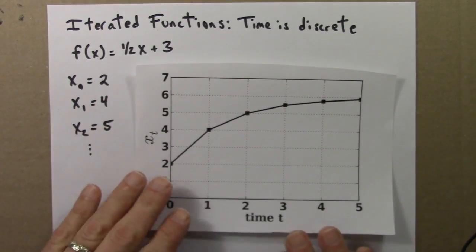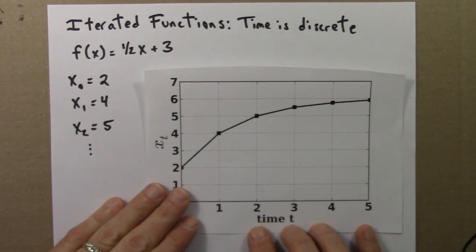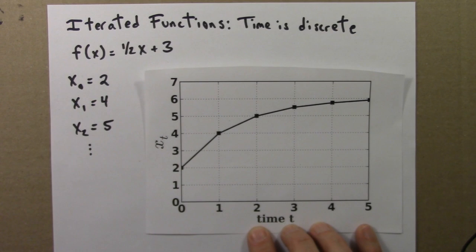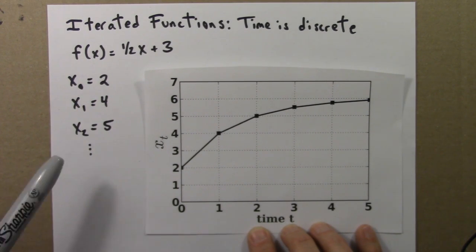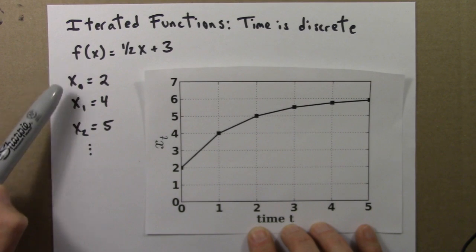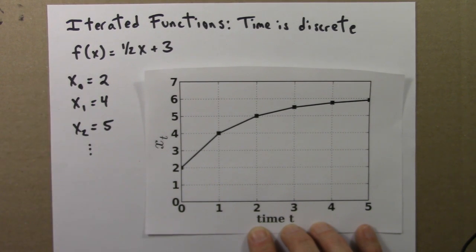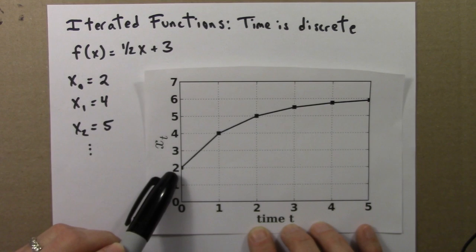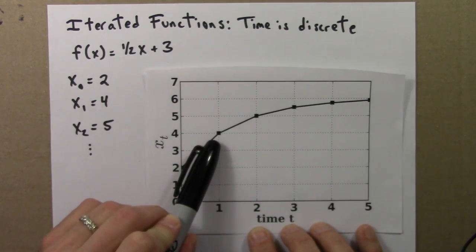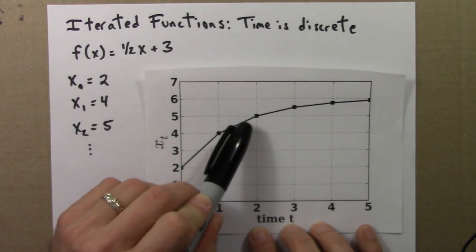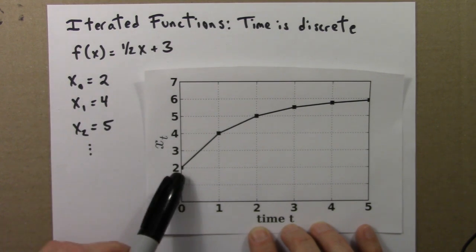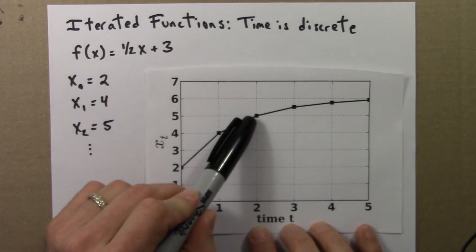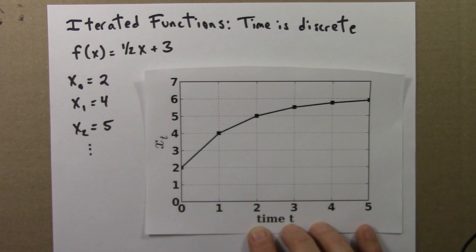As we did before, we can plot this in a time series plot. Here's a time series plot for the first 4 or 5 iterates of this function — 2, 4, 5. We can see the value starts at 2, it goes to 4, it goes to 5, just like we'd expect. Usually we draw a line between the dots, just because it makes a more compelling looking graph and it's easier to read.